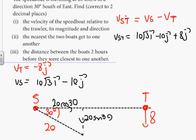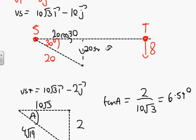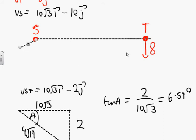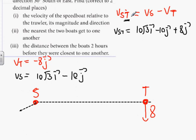Find the nearest the two boats get to each other. When you do relative velocity, what happens to the second letter? You're fixing it to the spot. What you're experiencing is what does a person on the trawler see the speedboat do, as if I was stationary.